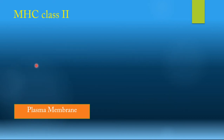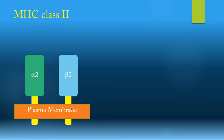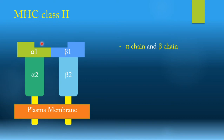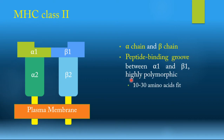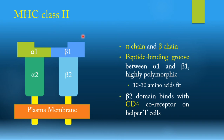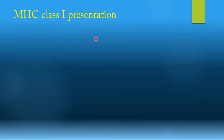MHC class 2 has two chains — an alpha chain and a beta chain. Between the alpha 1 and beta 1 subunits is the peptide-binding groove, which is also highly polymorphic and can fit 10 to 30 amino acids. MHC class 2 interacts with CD4-positive helper T cells, and the CD4 co-receptor binds to the beta 2 area of MHC class 2. So in MHC class 1, alpha 3 binds CD8, while in MHC class 2, beta 2 binds CD4.